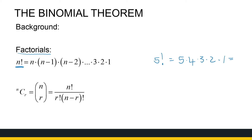The times 1 doesn't really make a difference, but just for completeness it's there. So it's 20 times 3, which is 60 times 2, which is 180. So that is 5 factorial — that's what factorial means for any natural number n.